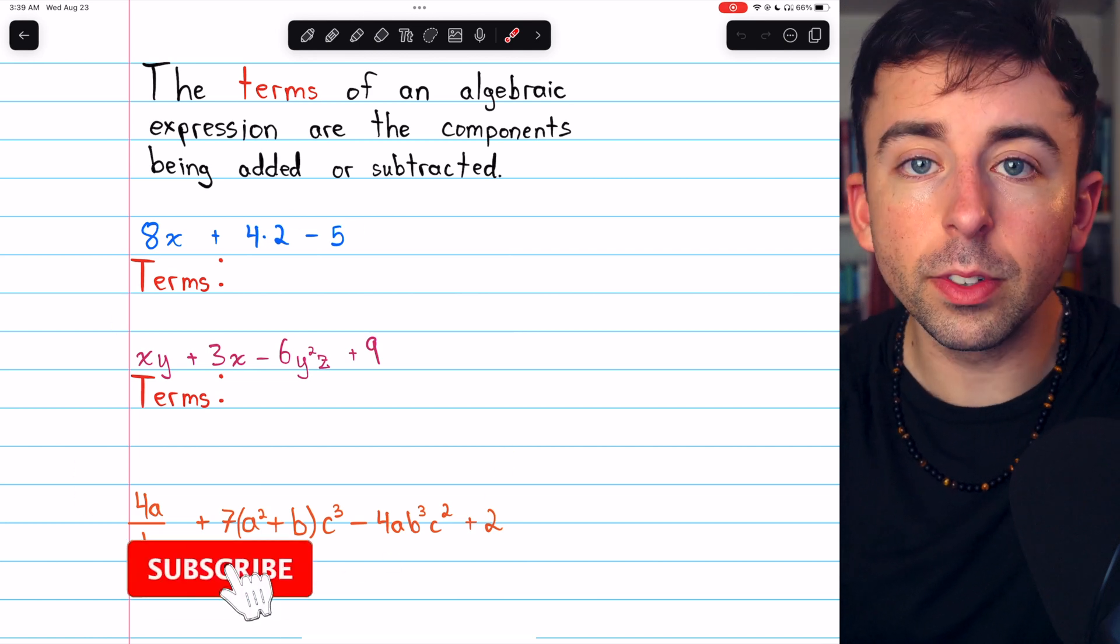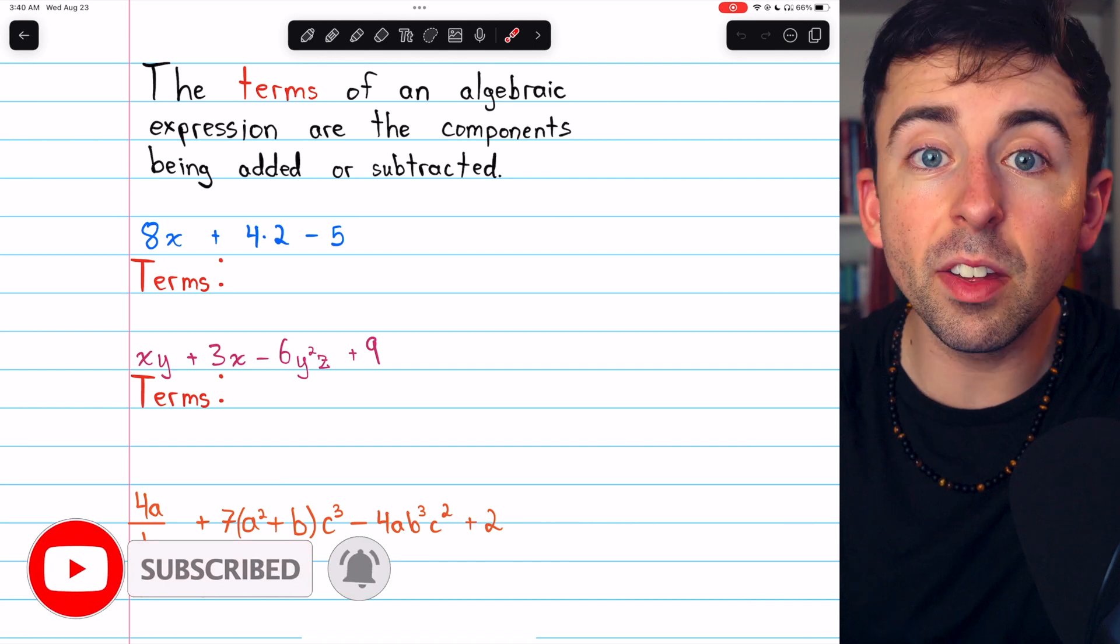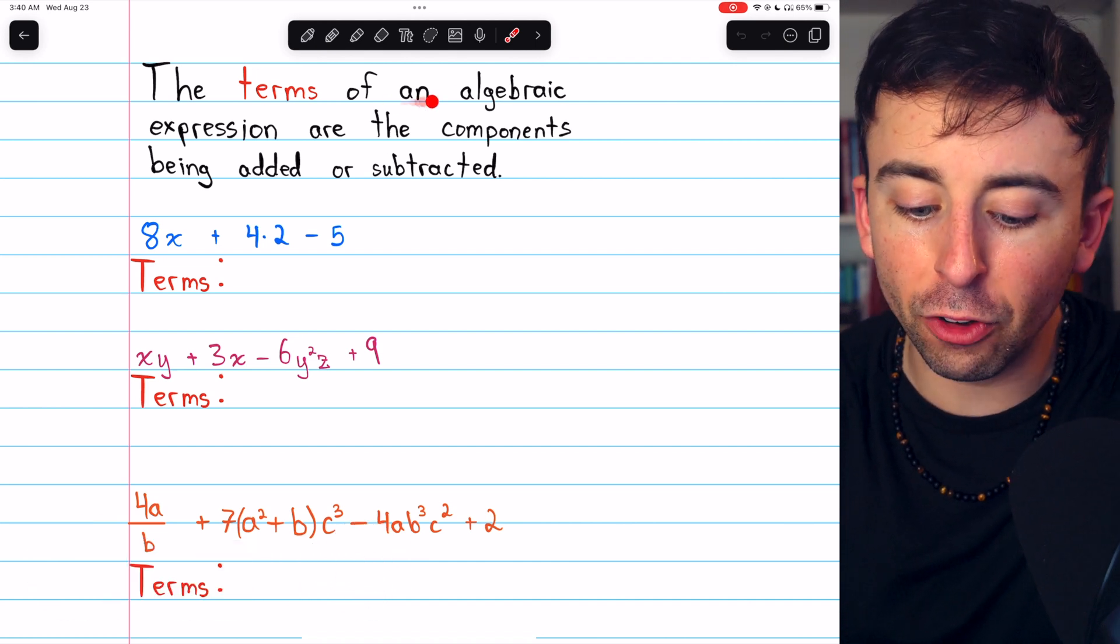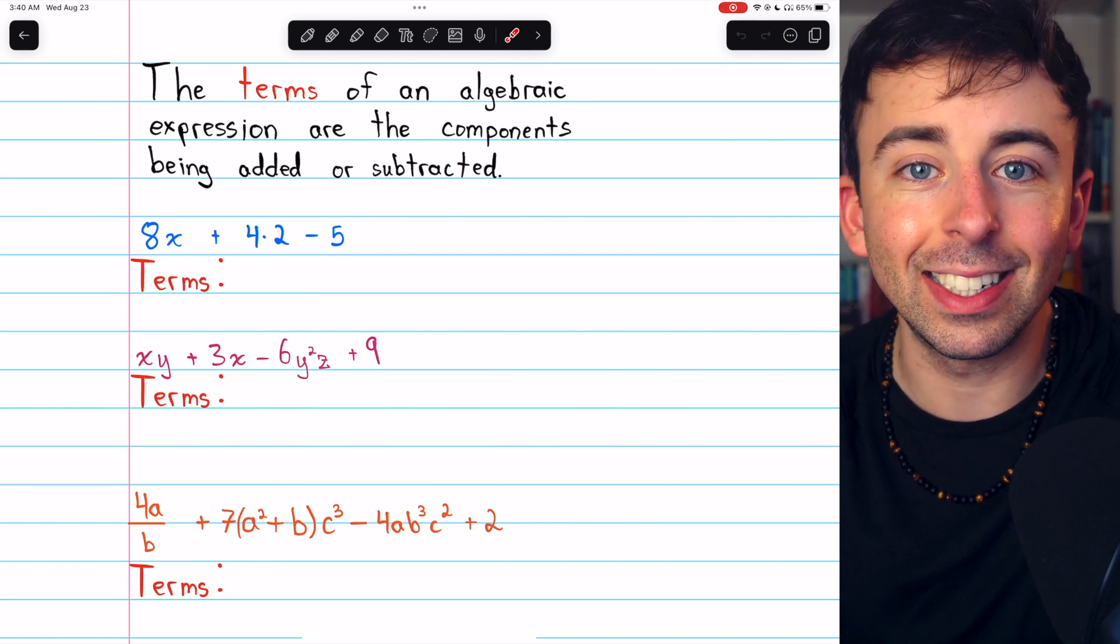Let's look at these three examples of algebraic expressions and identify the terms and the factors in each one. The terms of an algebraic expression are simply the components that are being added or subtracted together.